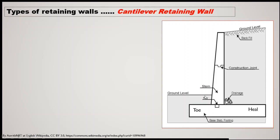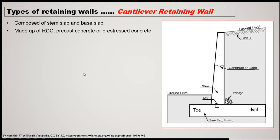On the toe side, there is a ground level, and whatever material is there will also apply some pressure, while the backfill will also apply pressure. The cantilever retaining wall is composed of a stem slab and a base slab. This type of retaining wall may be made of RCC, precast concrete, or prestressed concrete. Construction can take place at site, or precast components can be assembled at site — so both pre-casting and cast-in-situ construction are possible.